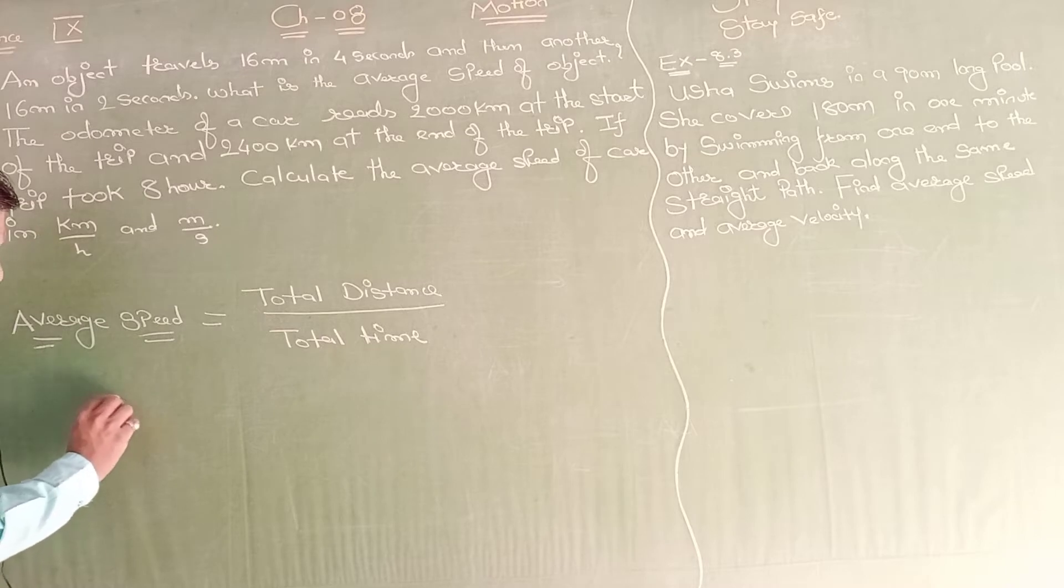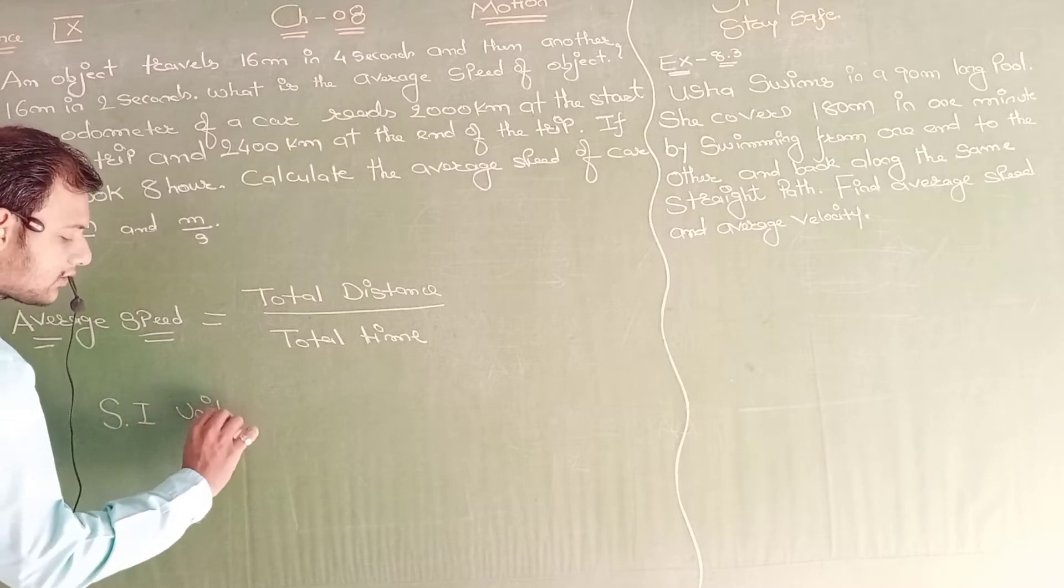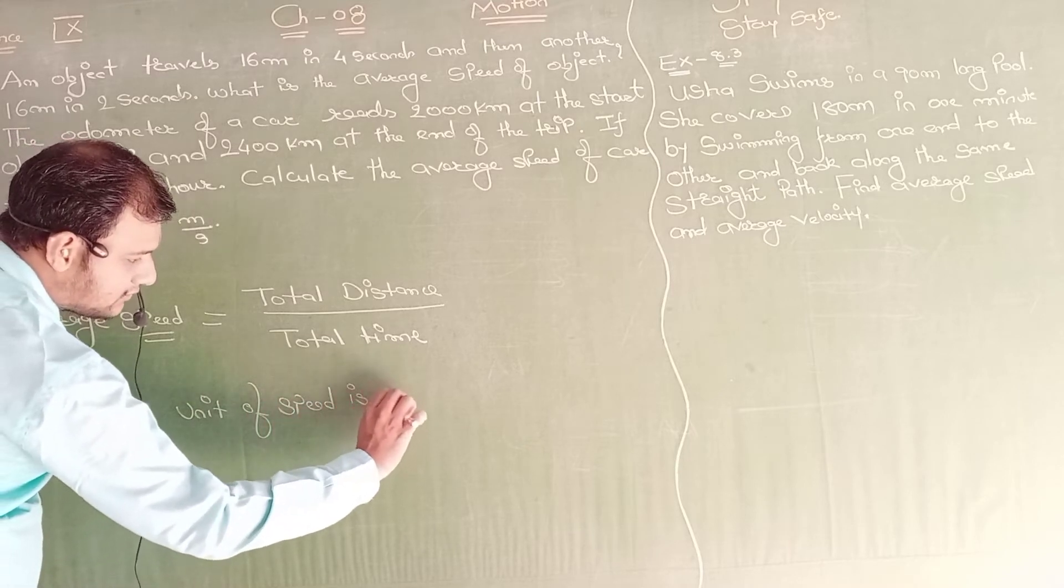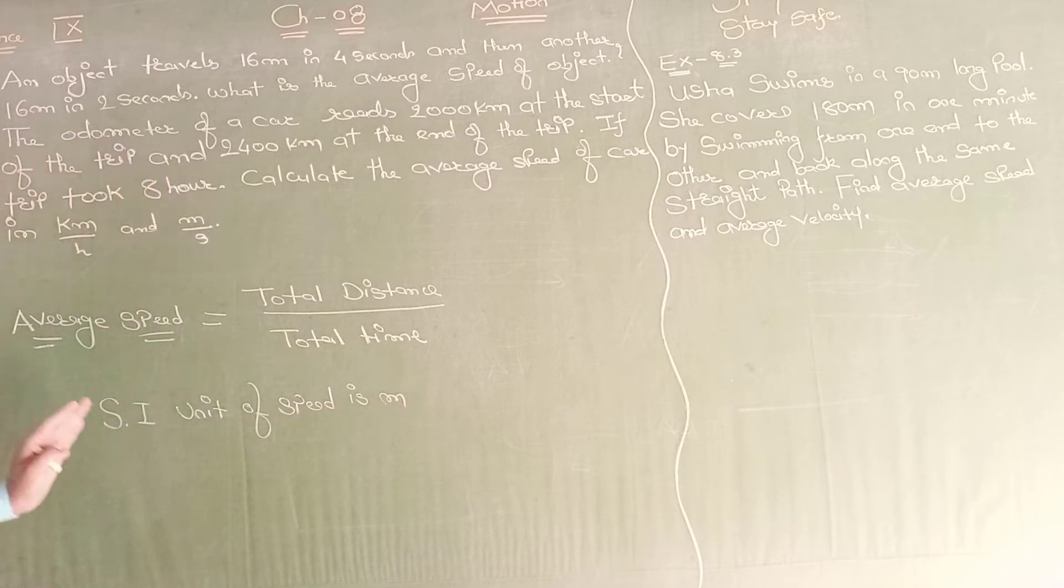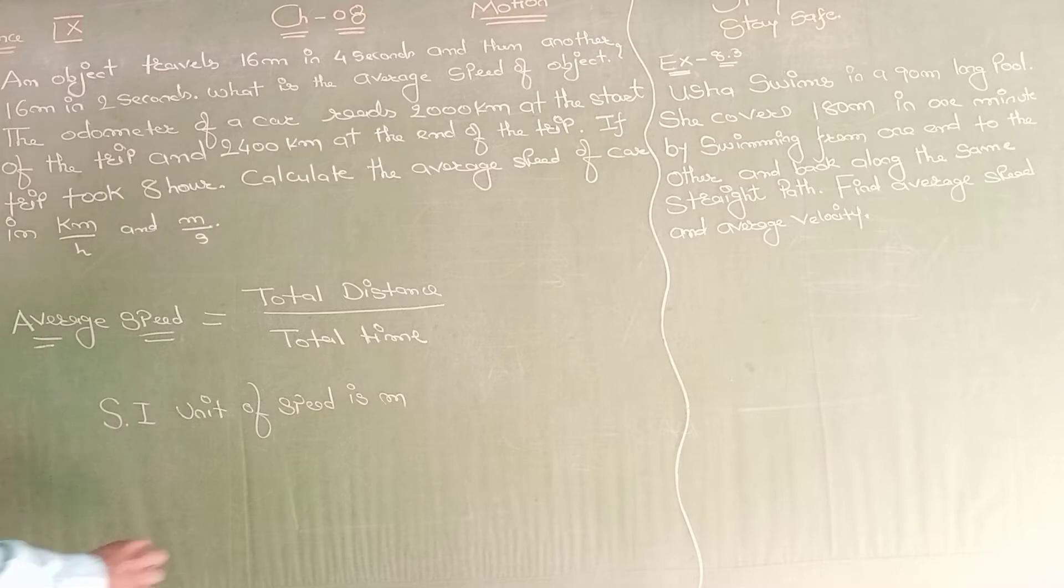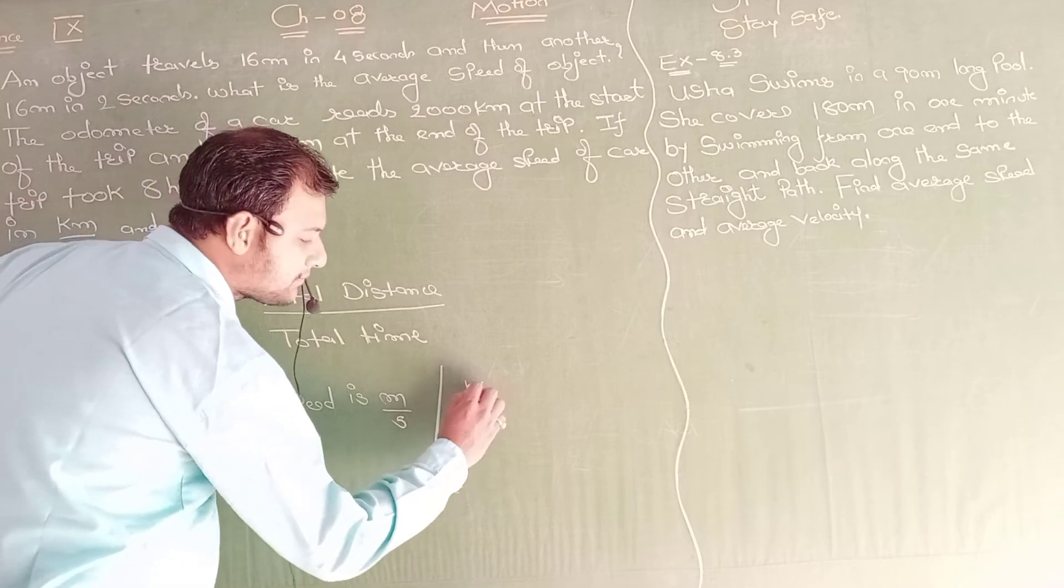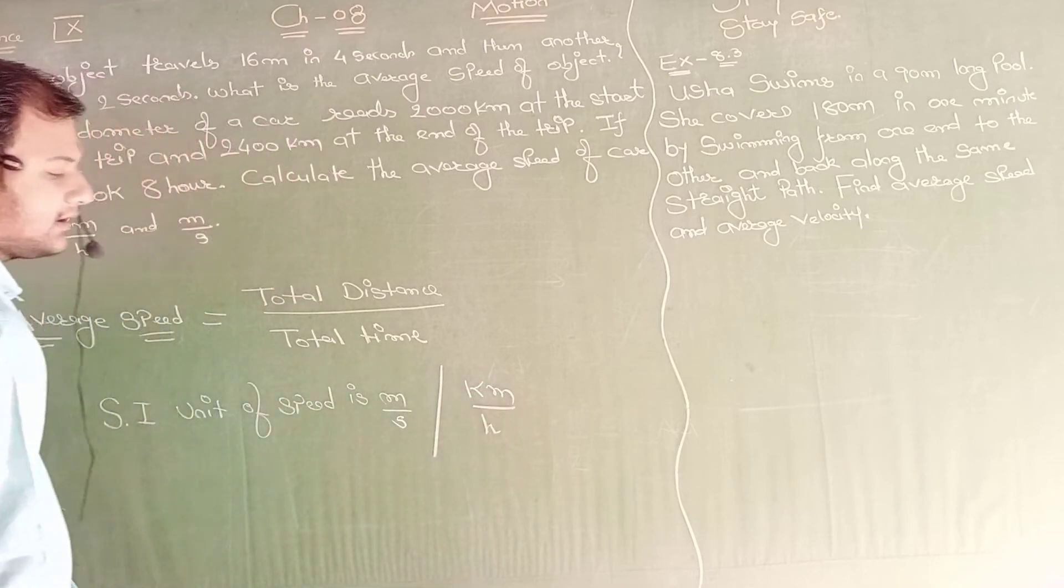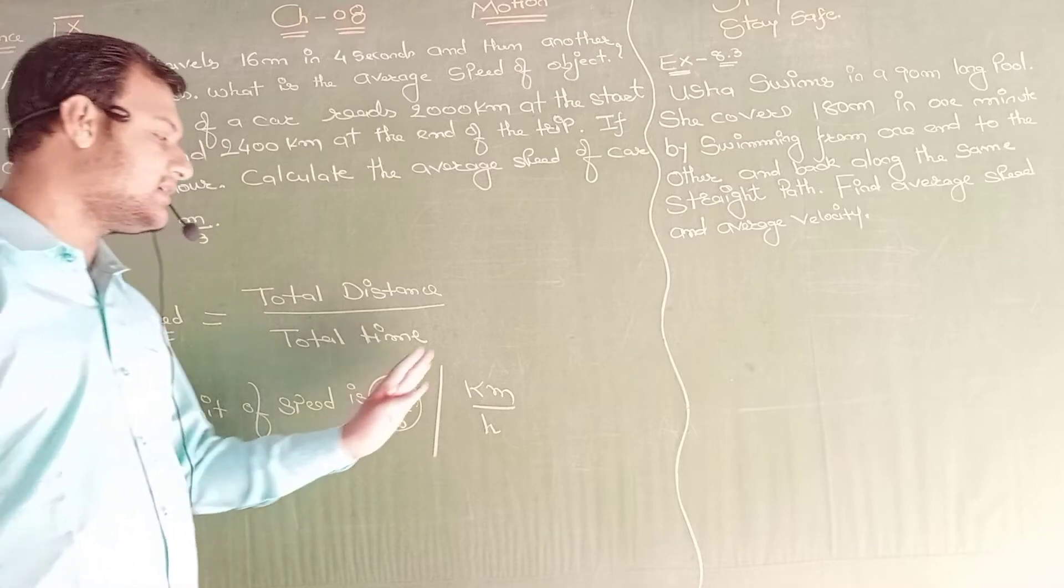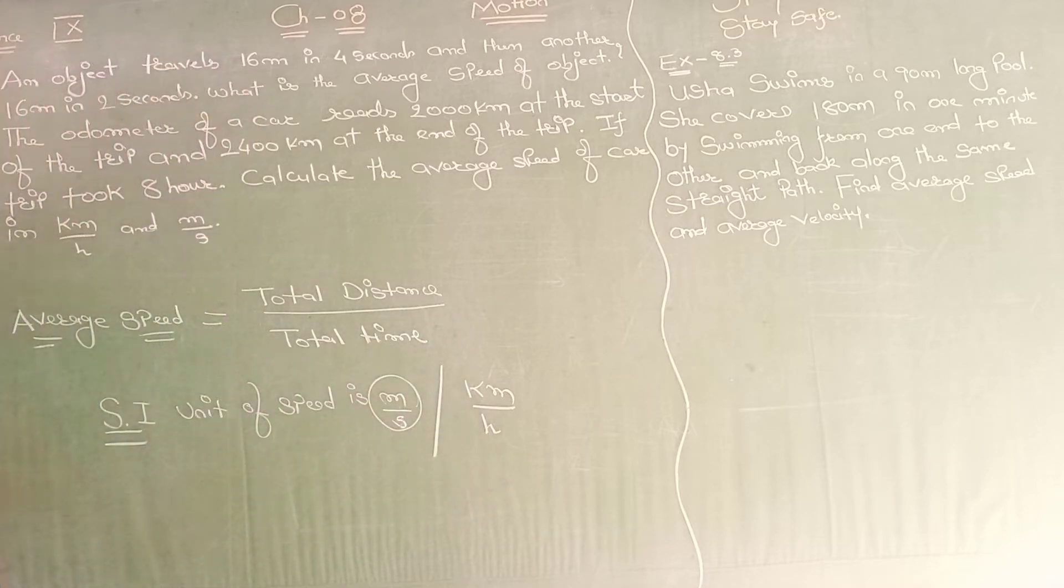SI unit, SI means System International unit of speed is meter per second. You are knowing that speed can be measured in kilometer per hour, but System International is only meter per second. Another unit of speed is kilometer per hour.